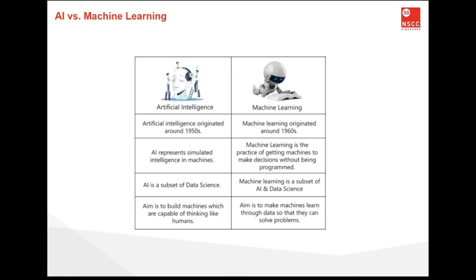Artificial intelligence and machine learning are parts of computer science that are correlated with each other. These two technologies are the most trending technologies used for creating intelligent systems. Although they are related, and sometimes people use them as synonyms, they are two different terms. On a broader level, AI is the bigger concept to create intelligent machines that can simulate human thinking capabilities and behavior, whereas machine learning is an application or subset of AI that allows machines to learn from data without being programmed explicitly. The aim of AI is to build machines capable of thinking like humans, while the aim of machine learning is to make machines learn through data so they can solve data-driven problems.